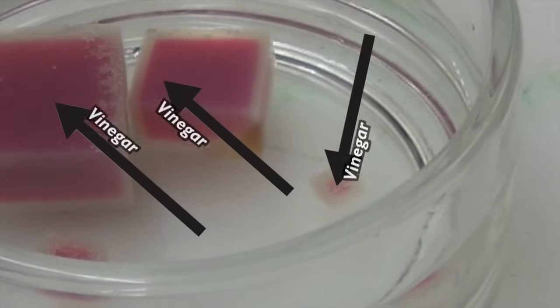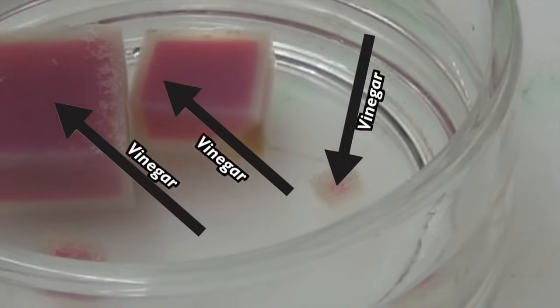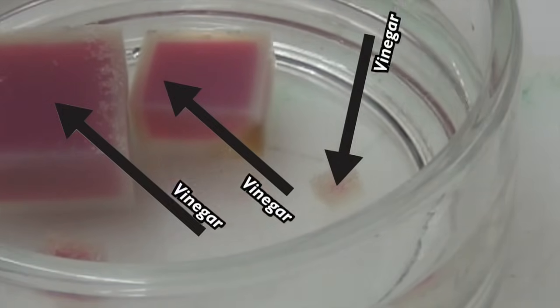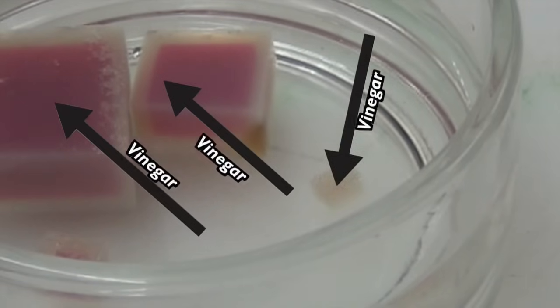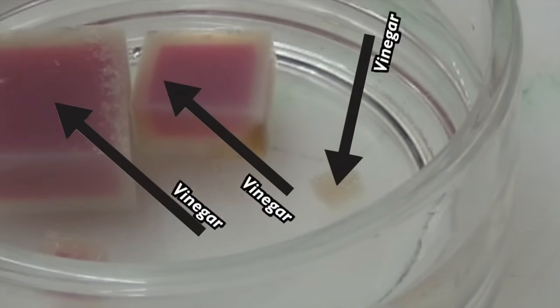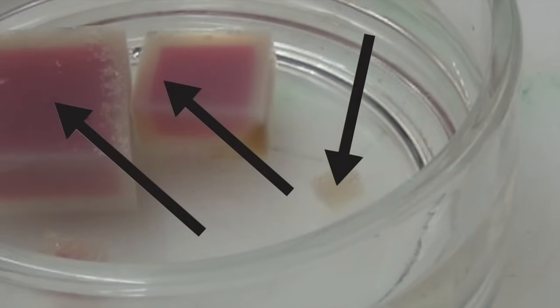When we put our agar cubes in the vinegar, the vinegar is more concentrated outside the cubes than it is inside. So because there's nothing from stopping the vinegar from moving in, the vinegar diffuses from where it is, outside the cubes, to where it isn't, inside the cubes.